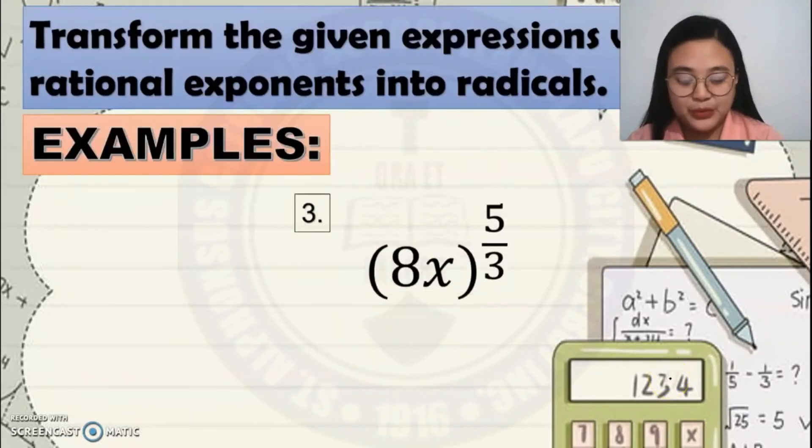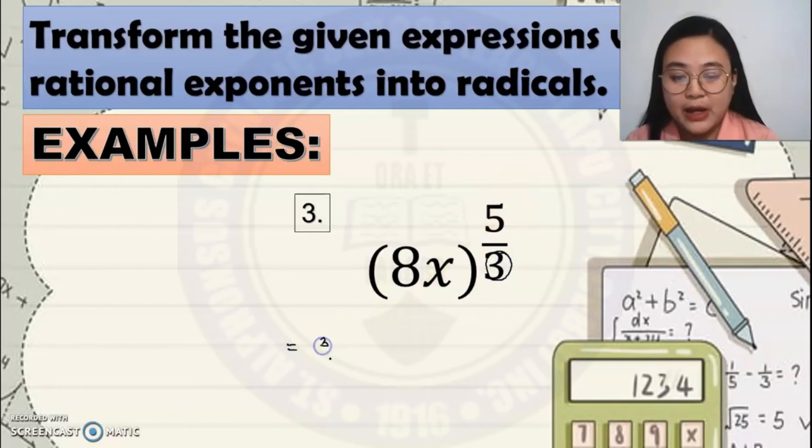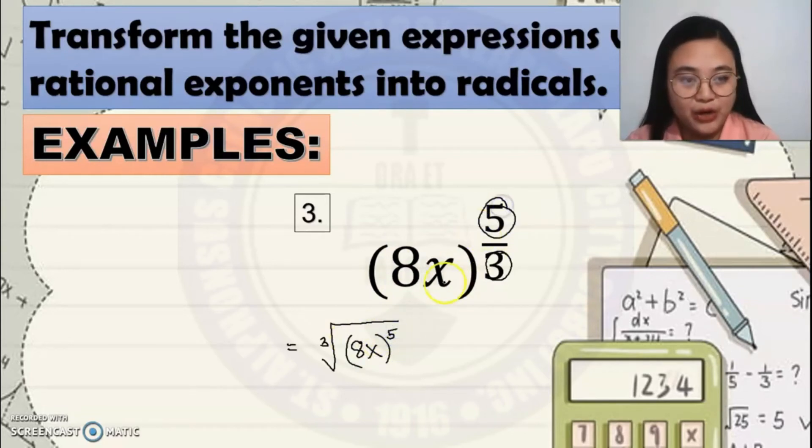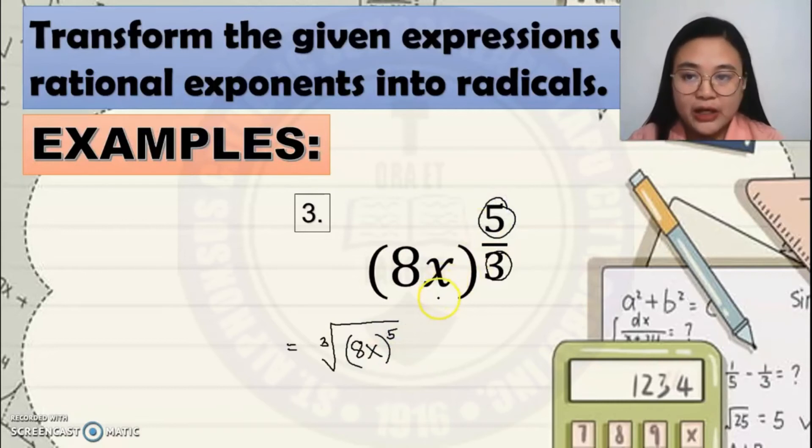Next example. 8X raised to 5 over 3. Always remember the denominator of the rational exponent will be the index of the radical. What's the base will be the base of the radicand, will become the radicand, and raised to 5, because 5 is the numerator of the exponential expression.